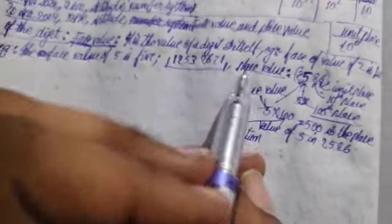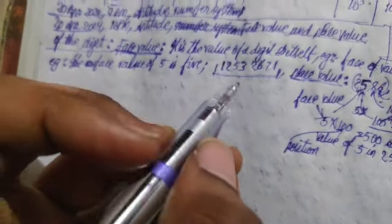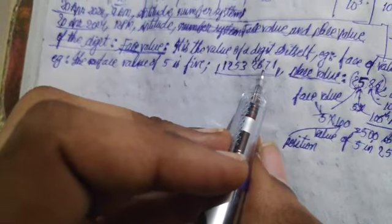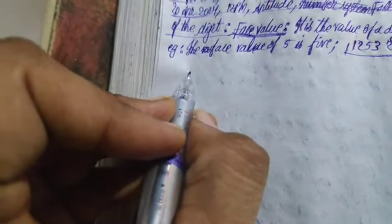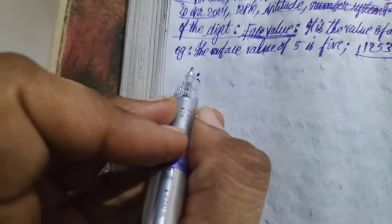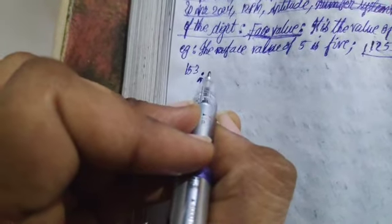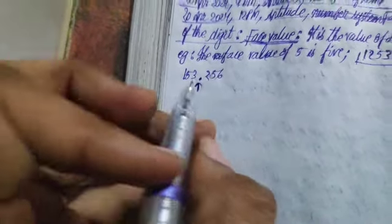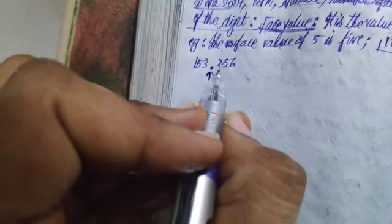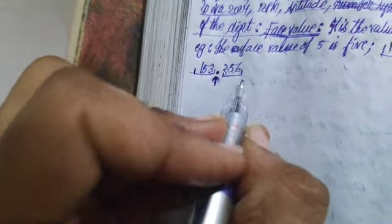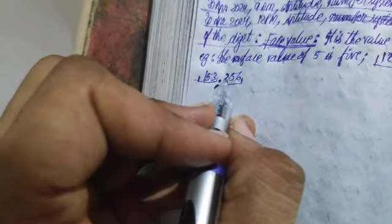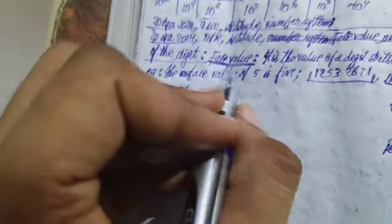So this is all about face value and place value. You can directly speak a number's digits — like 1, 2, 5, 3, 2, 6 — when delivering a phone number or similar, and that is using face value. Similarly, for a decimal number like 153.256, we name the digits on each side of the point using their face values.